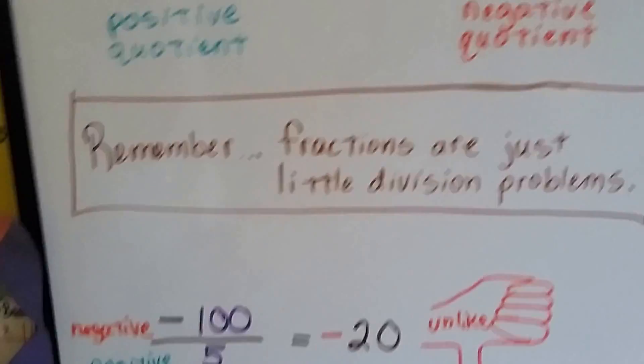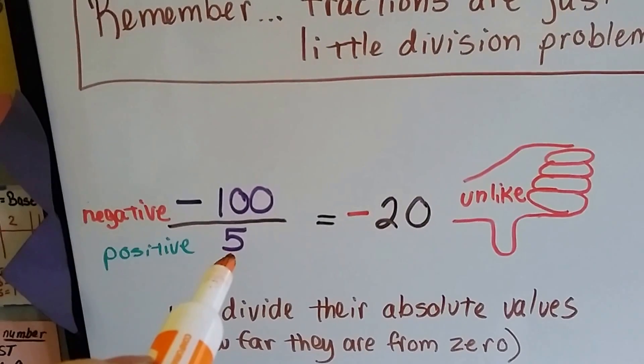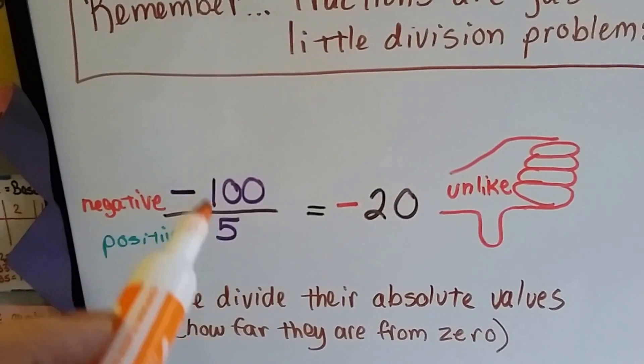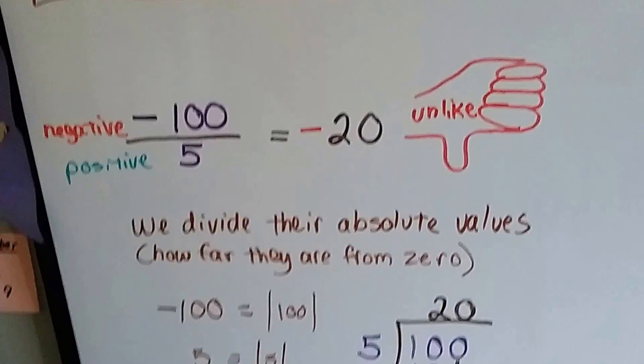Remember, fractions are just little division problems. If you have negative 100 over positive 5, it just means negative 100 divided by 5. It's going to equal negative 20 because their signs are unlike.